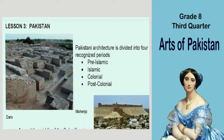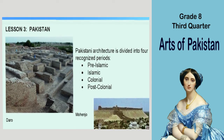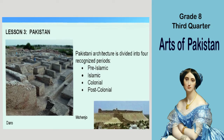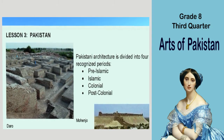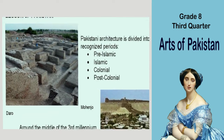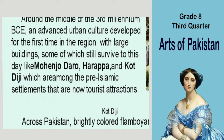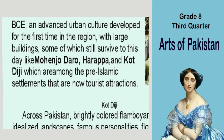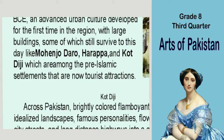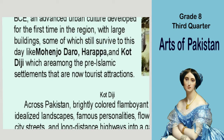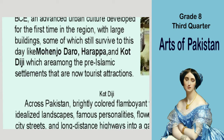Pakistani architecture is divided into four recognized periods: pre-Islamic, Islamic, colonial, and post-colonial. Around the middle of the third millennium BCE, an advanced urban culture developed for the first time in the region, with large buildings, some of which still survive to this day, like Mohenjo-daro, Harappa, and Kot Diji, which are among the pre-Islamic settlements that are now tourist attractions.